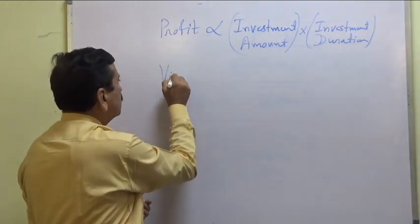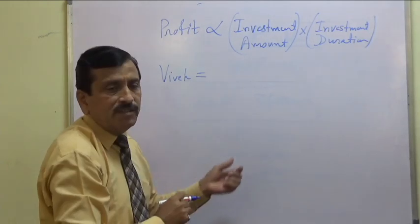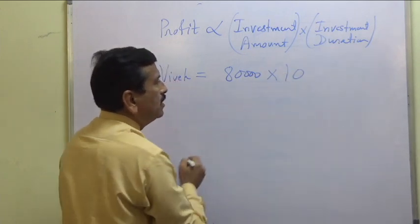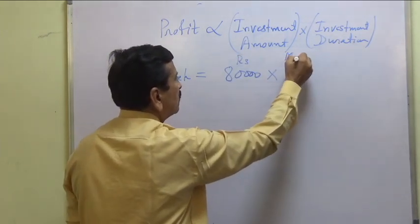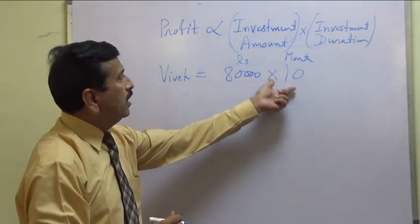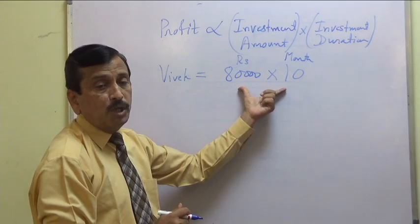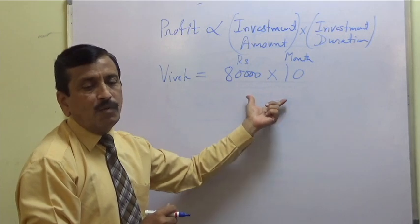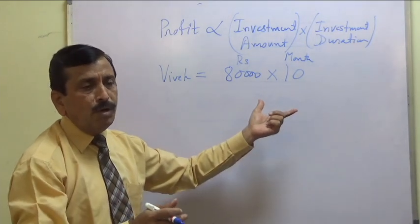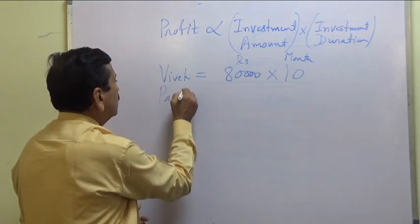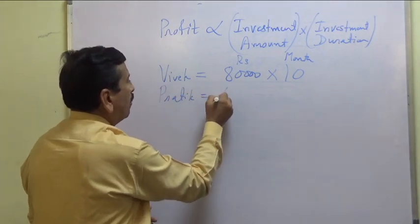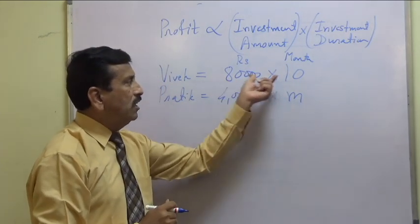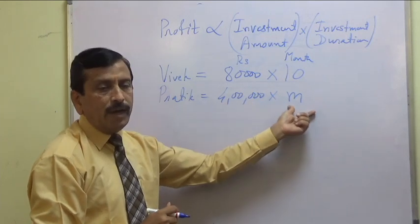Vivek has an investment of 80,000 for 10 months. Rupees times months gives amount times duration, so profit is proportional to this figure. Pratik invested 4 lakh rupees for M months. So Vivek invested 80,000 for 10 months and Pratik invested 4 lakhs for M months.